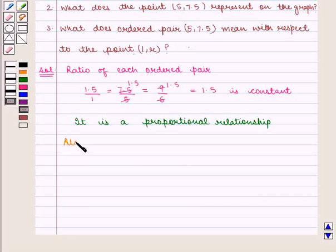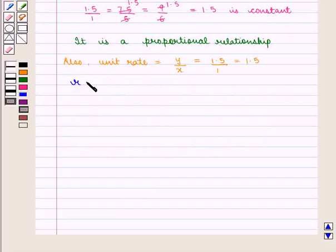Also, unit rate will be given by y upon x, that is 1.5 by 1, which is equal to 1.5. So, here R is the unit rate and the cost of call per minute will be 1.5 cents.